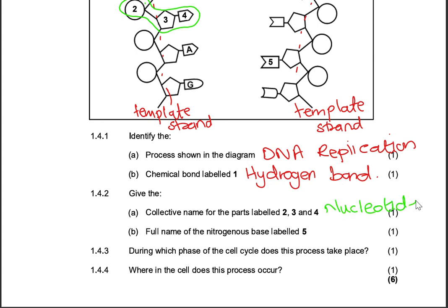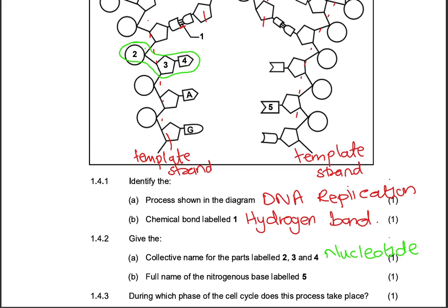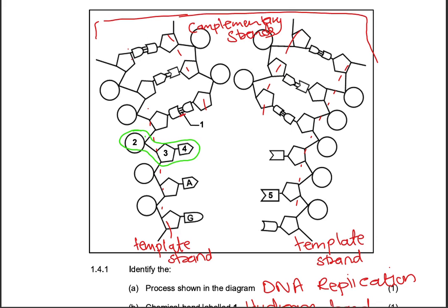Give the full name of the nitrogenous base labeled 5. You are asked to give the full name and not the letter or not just identify the nitrogenous base. They've asked you for the name here, so you need to provide the name of the nitrogenous base labeled 5. So let's look for the nitrogenous base labeled 5. There it is. So this is the base that will be paired with this one.